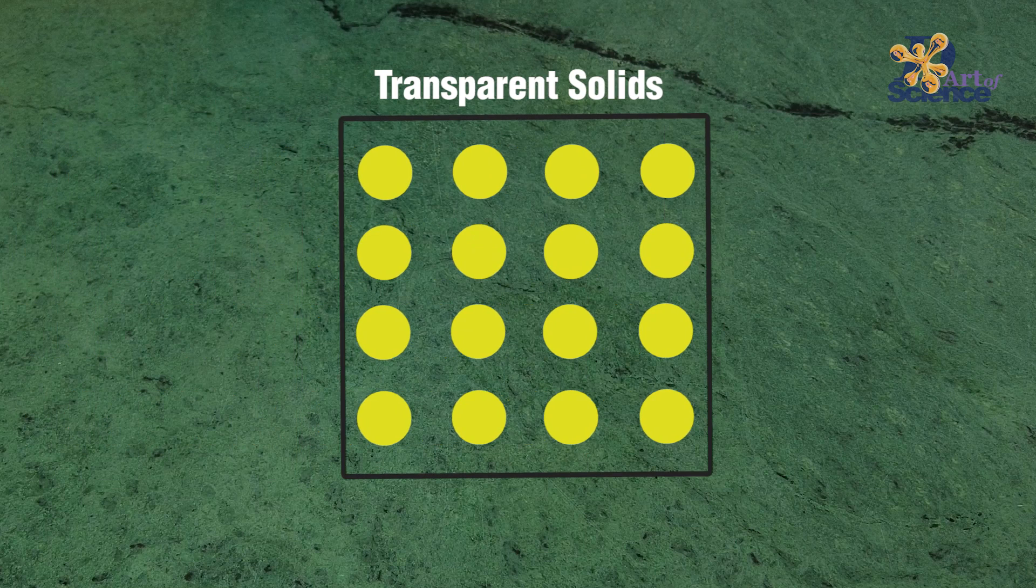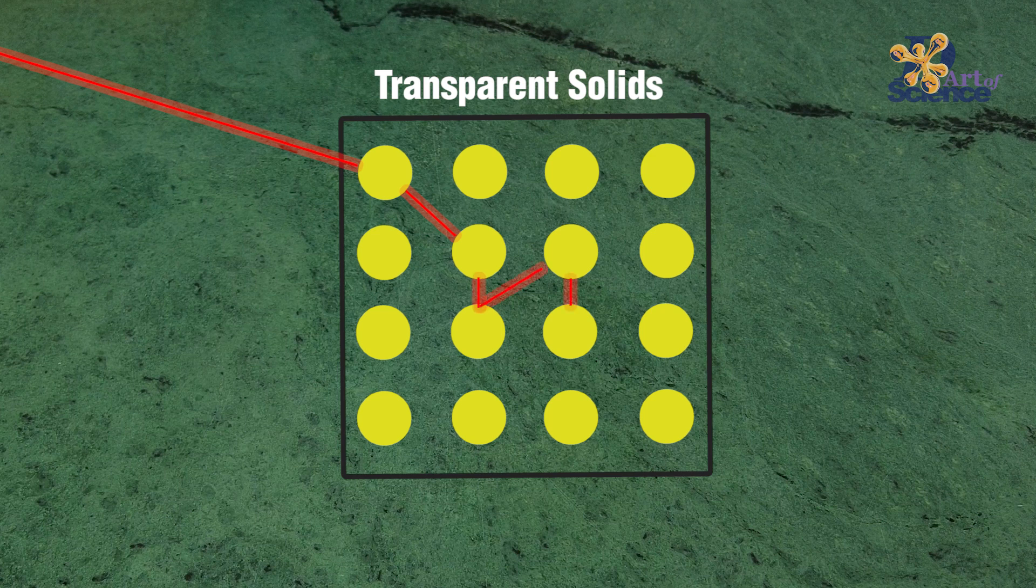Now what happens in transparent solids is light has to travel through this molecular obstacle course. It takes time to dodge all the molecules and finally come out from the other direction. Note that the speed of light does not decrease, it just takes time to dodge the molecules.